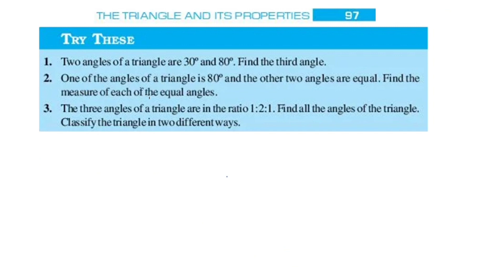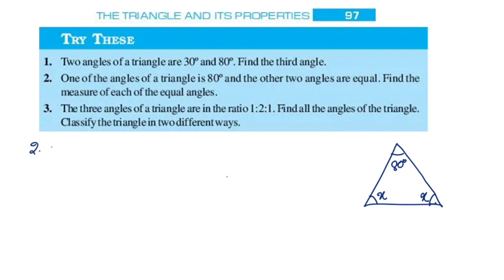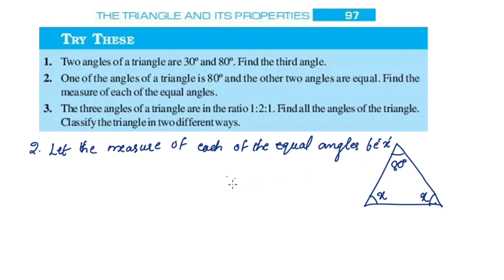Next, second question. One of the angles of a triangle is 80 degrees and the other two angles are equal. Find the measure of each of the equal angles. Let the measure of each of the equal angles be x. By angle sum property: 80 plus x plus x is equal to 180 degrees.